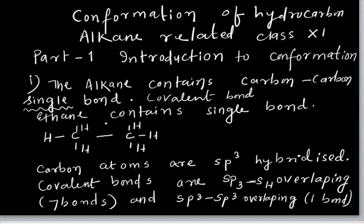If you see ethane, ethane contains all single bonds — C-H, C-C. But the point is this is not a simple single bond, because this carbon undergoes sp3 hybridization. This sp3 hybrid orbital of carbon overlaps with the sp3 hybrid orbital of the other carbon and that gives a sigma bond — a covalent bond.